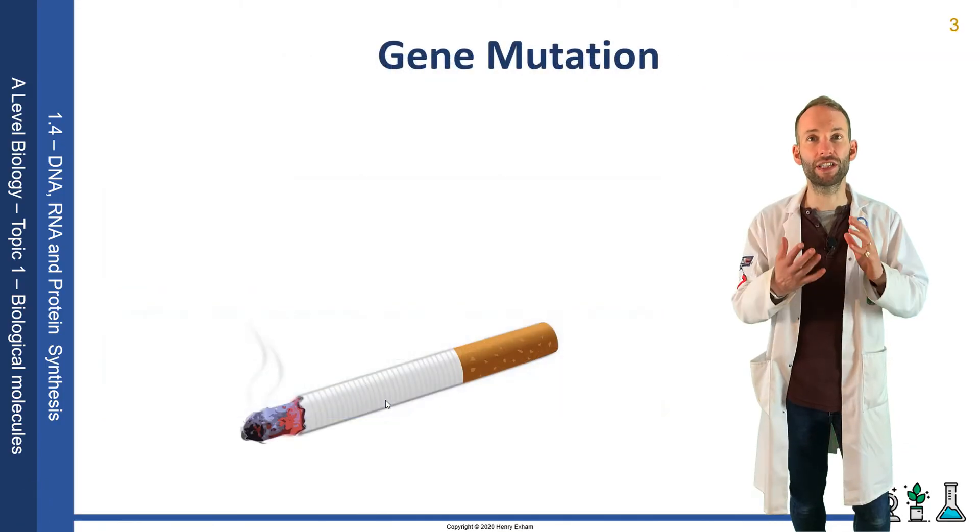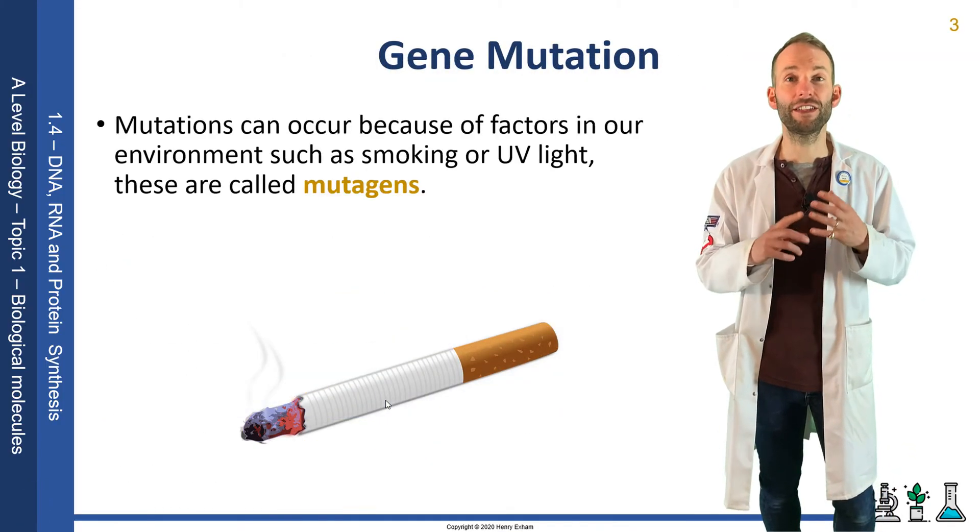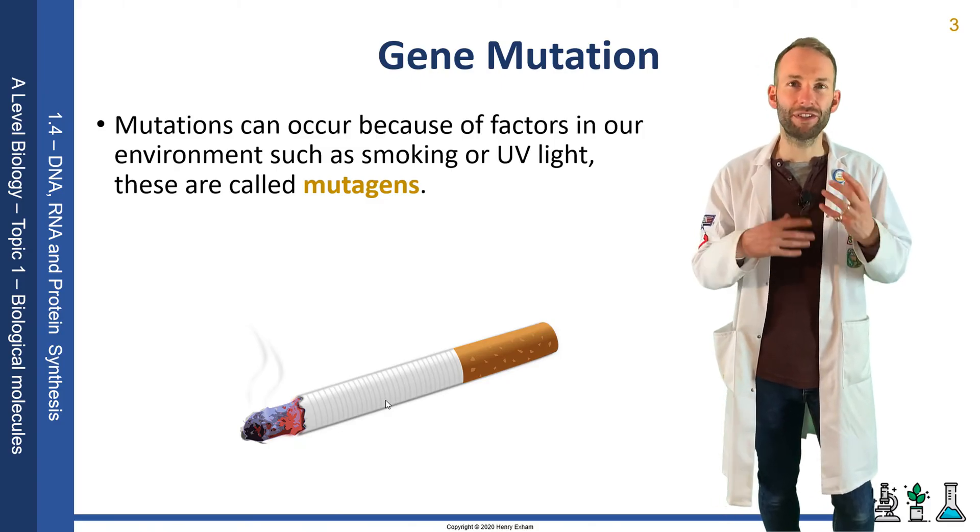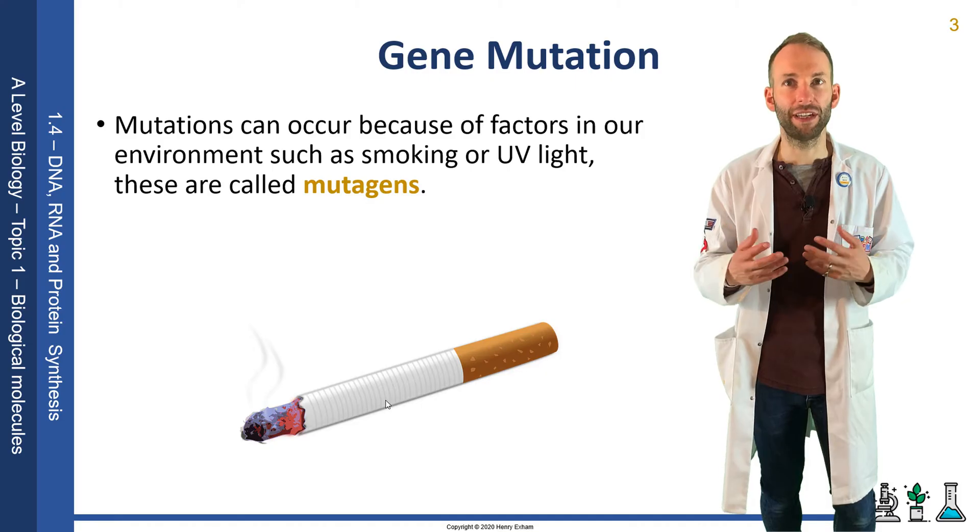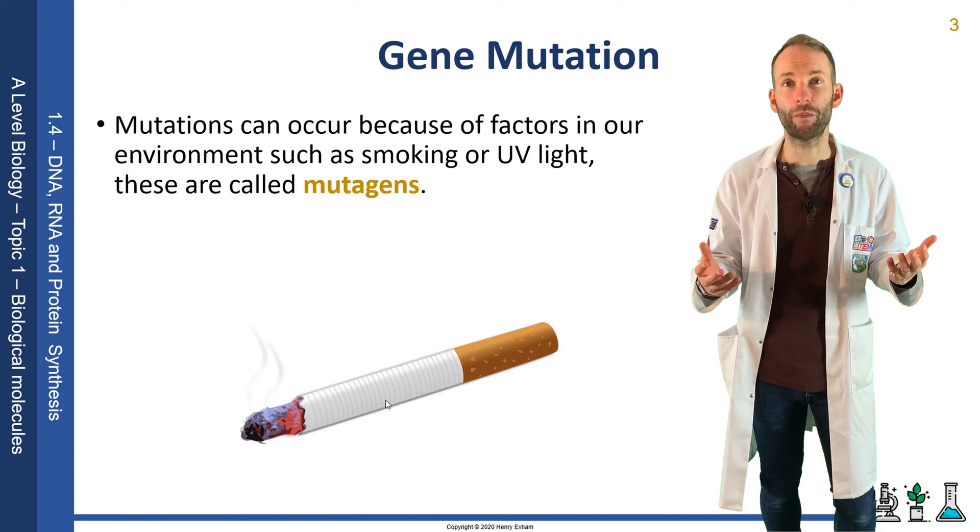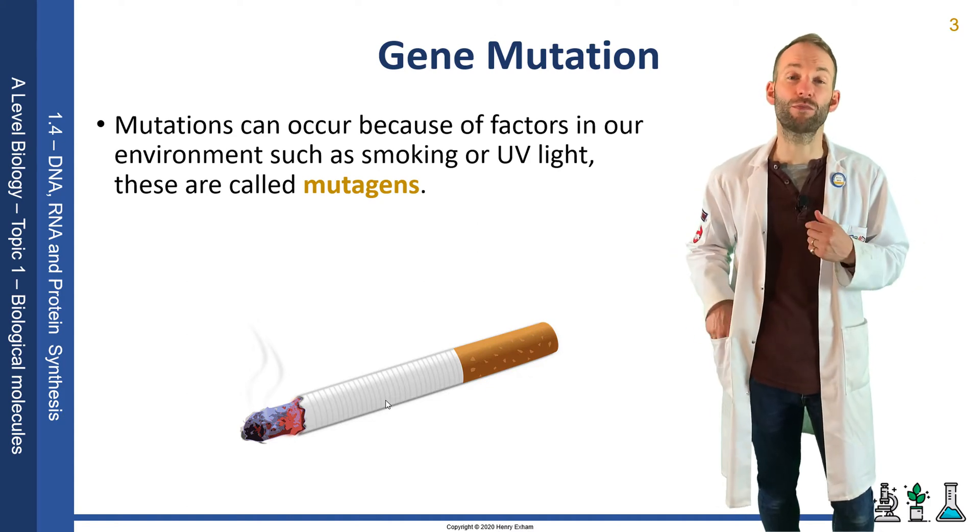Mutations can occur because of factors in our environment such as smoking or UV light. These factors are known as mutagens. However, mutations randomly happen all the time. It's just these mutagens increase the rate of them occurring. Quite often mutations are completely harmless, but every now and again they can cause serious problems.